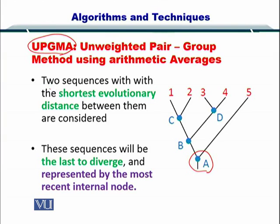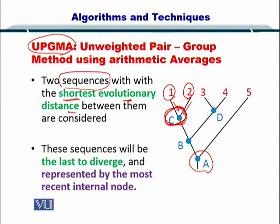To start with, you consider sequences with the shortest evolutionary distance. It essentially means you start with two sequences that are the most similar to each other. To know which sequences are similar, you simply use pairwise sequence alignment. You align these two sequences, see how different they are, and arrive at an inner node C. C becomes an ancestor for sequences 1 and 2.